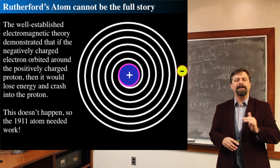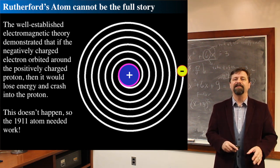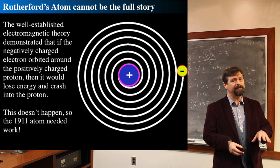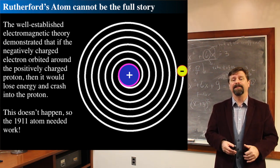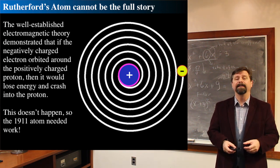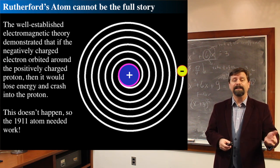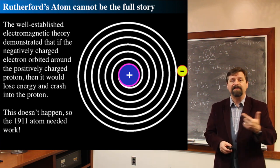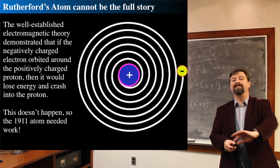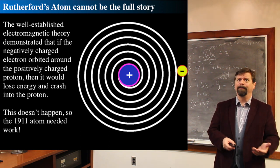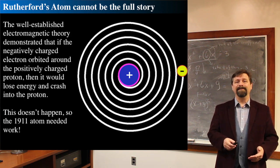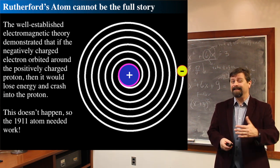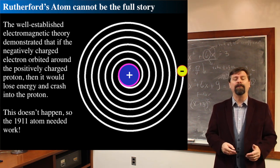Going forward in time from 1888 to 1911, that's when Rutherford came up with his concept for the atom, needed because Thompson's plum pudding model doesn't work. However, Rutherford's model also cannot be the final answer. If you have an electron orbiting a proton, the circular motion is accelerated motion, and accelerated charges emit energy. The electron will spiral in emitting electromagnetic radiation and crash into the proton. Extraordinarily well-established electromagnetic theory demanded they would eventually collide.